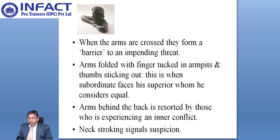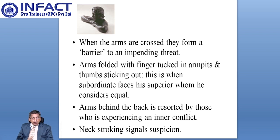She just may unclench those hands and let the words fly, which may not please you. When the arms are crossed, they form a barrier to an impending threat. Arms folded with fingers tucked in armpits and thumbs sticking out — this is when a subordinate faces his superior whom he considers equal. Arms behind the back is resorted to by those who are experiencing an inner conflict.